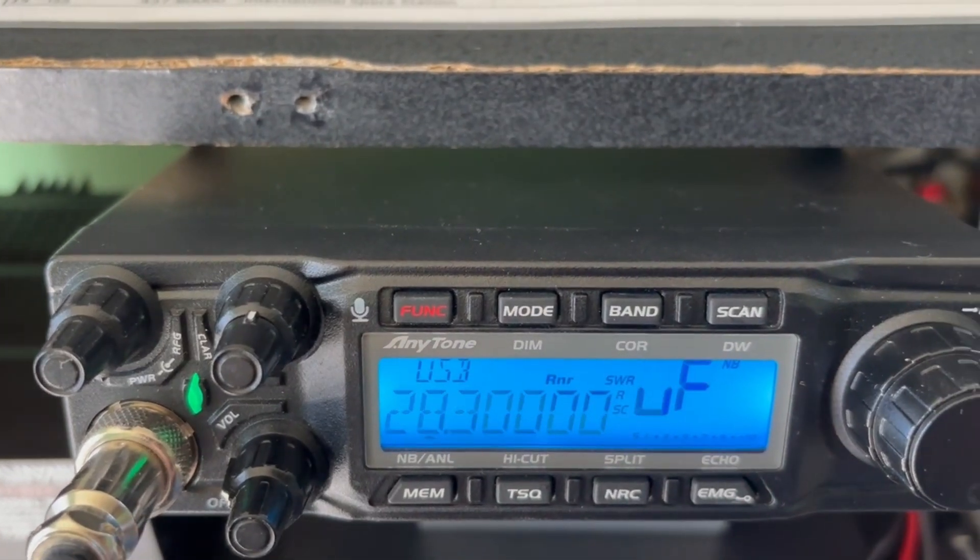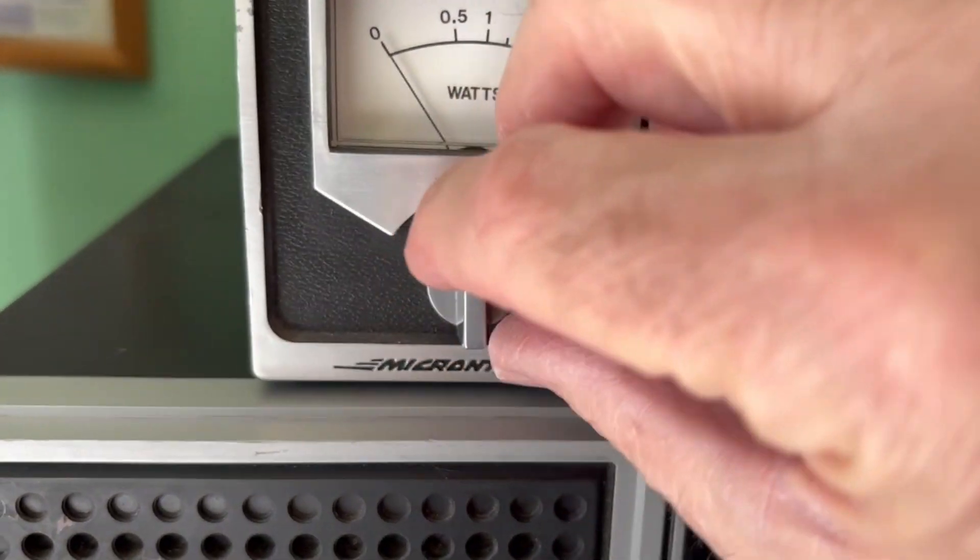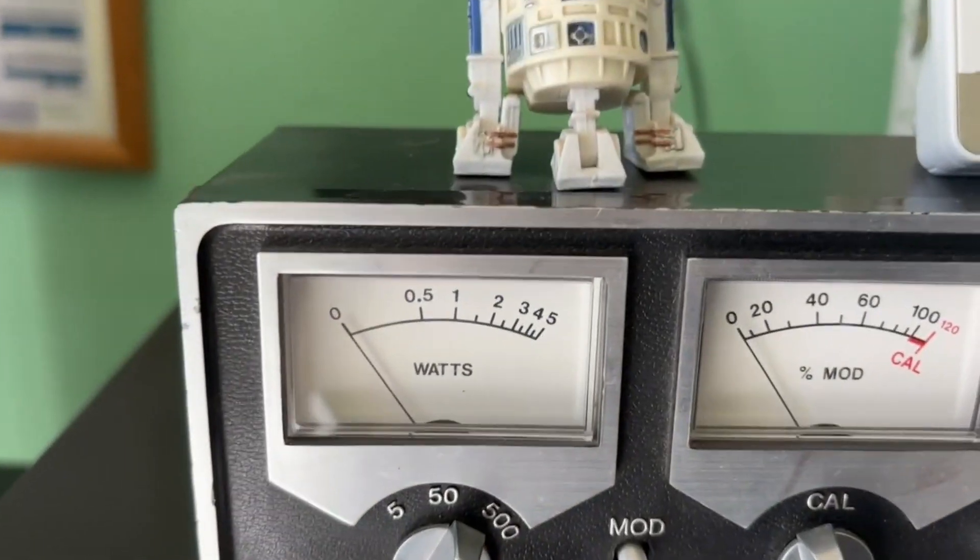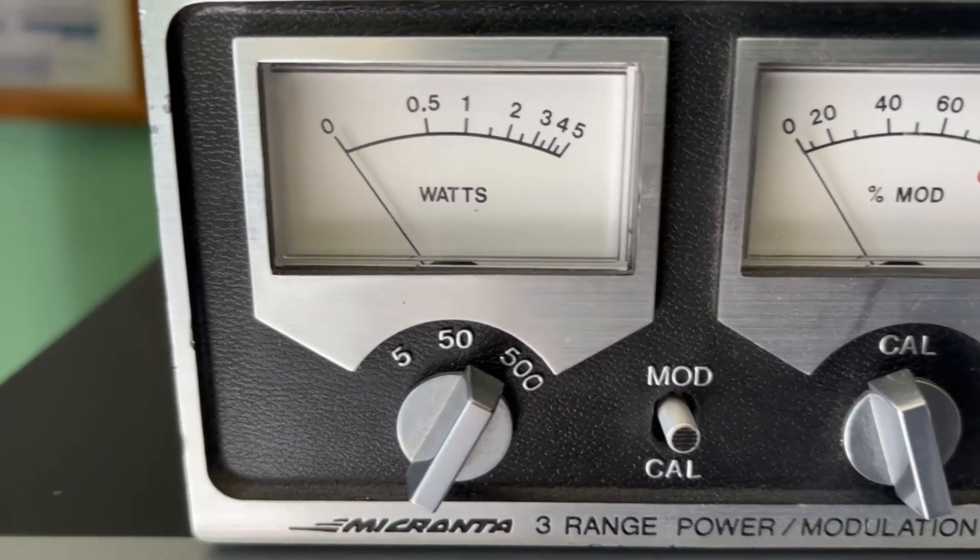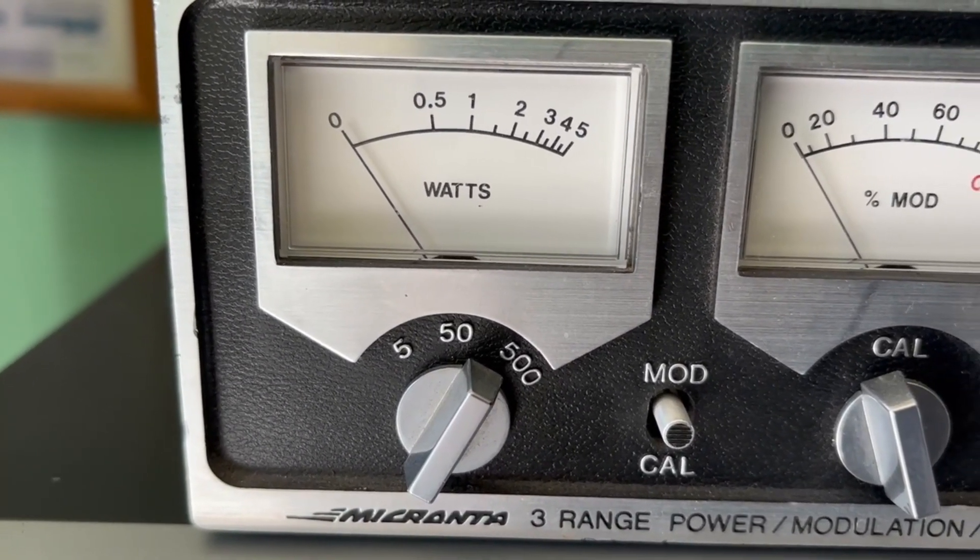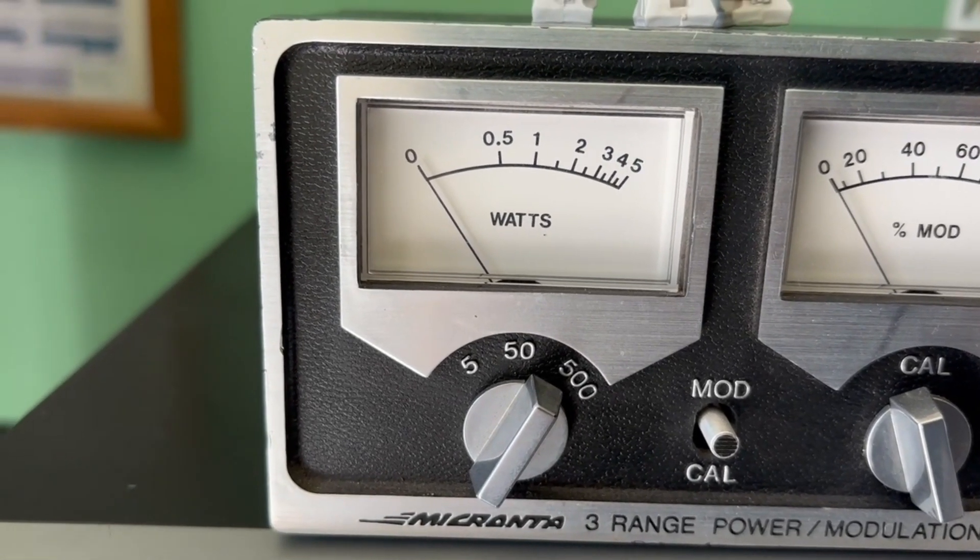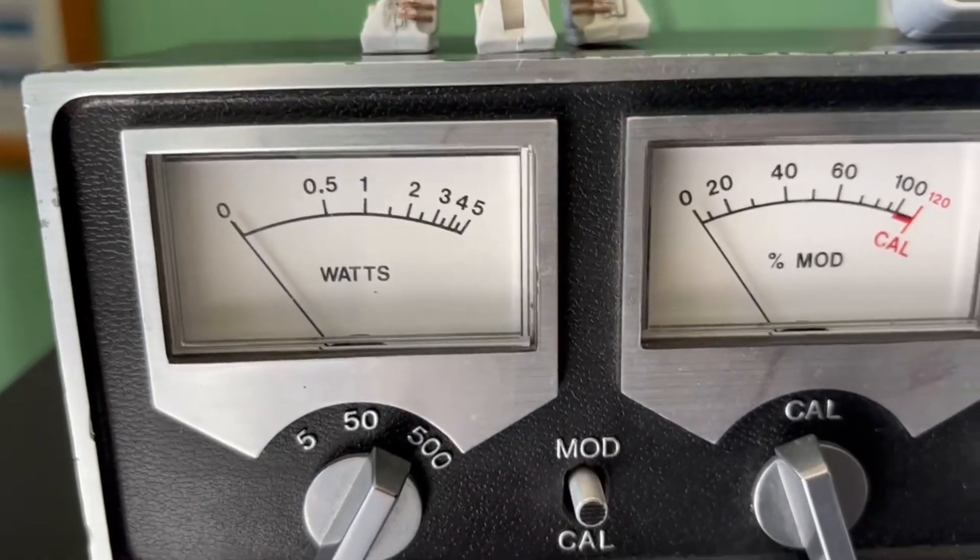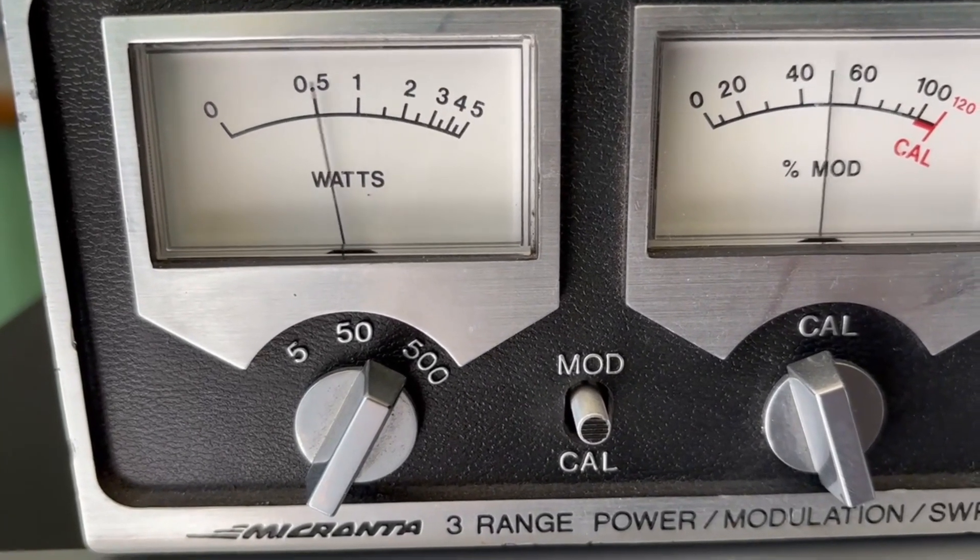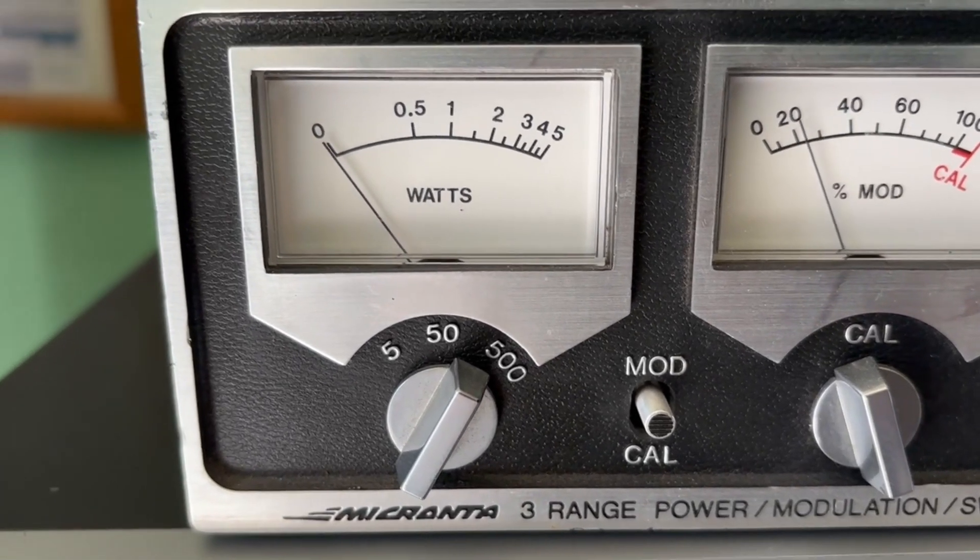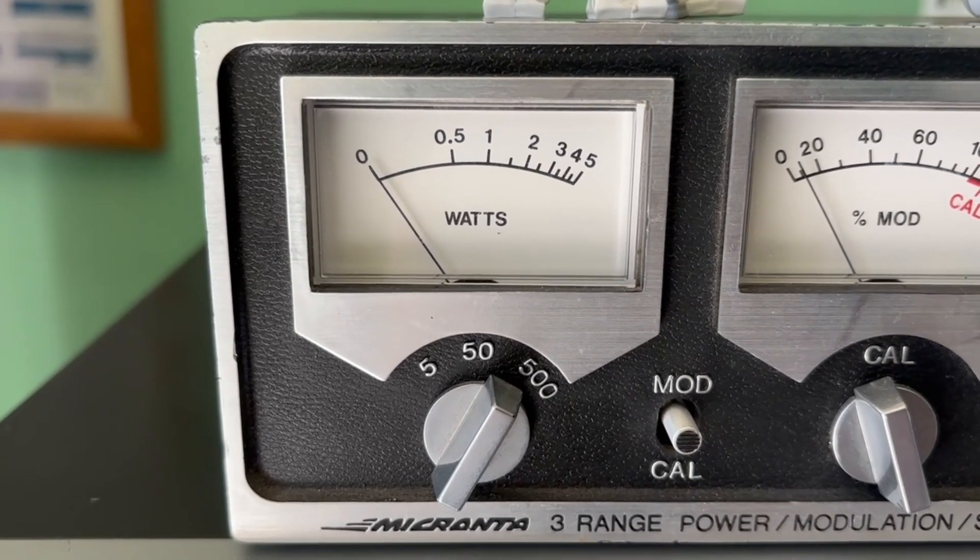And let's go ahead and put it on upper sideband. Let's go ahead and we're going to have to change the scale to 500 watts because I know what it swings to. And the book said we should get around 80 watts PEP on sideband. So we're on upper sideband. So it looks like we might be getting around 110, 120.